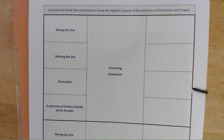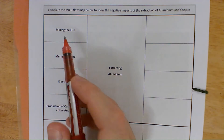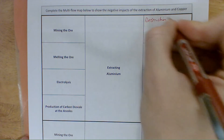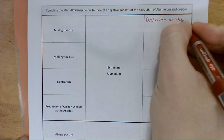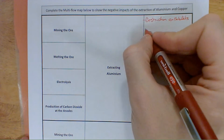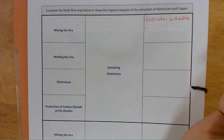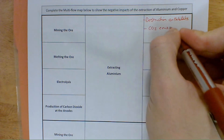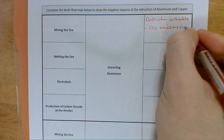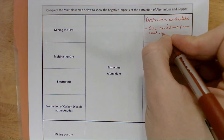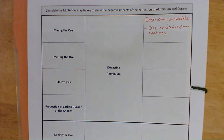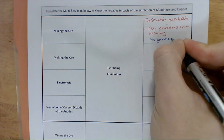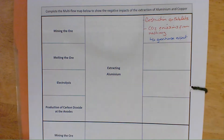The first one we'll look at is the extraction of aluminium — the impact on the environment from mining the ore. We have destruction of habitats, and CO2 emissions associated with machinery. We need to consider CO2 emissions and the greenhouse effect, because CO2 is a greenhouse gas.